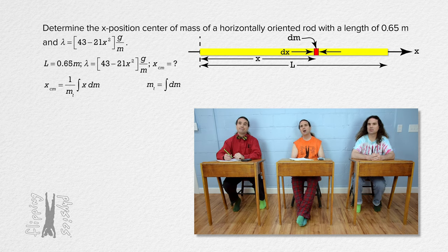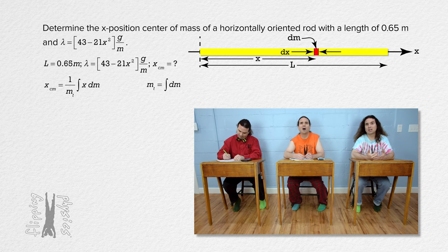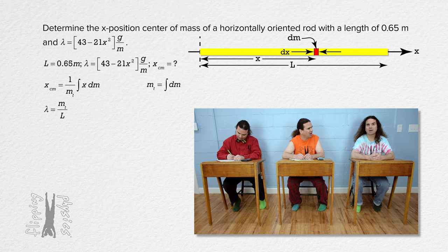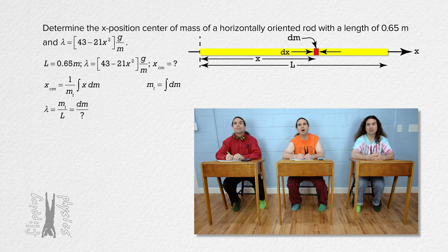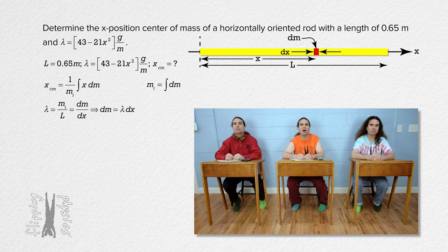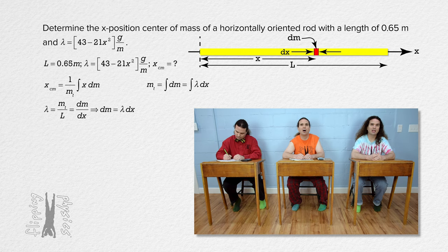Right. Linear mass density equals, well, for the whole rod it equals the total mass of the rod divided by the length of the whole rod. For the infinitesimally small piece dm, its linear mass density equals its mass, or dm, divided by its width, which is the infinitesimally small width dx. Therefore, dm equals lambda times dx. We can substitute that back into the equation for total mass of the rod. Actually, now we have all the information we need. Lambda equals 43 minus 21 times x squared.